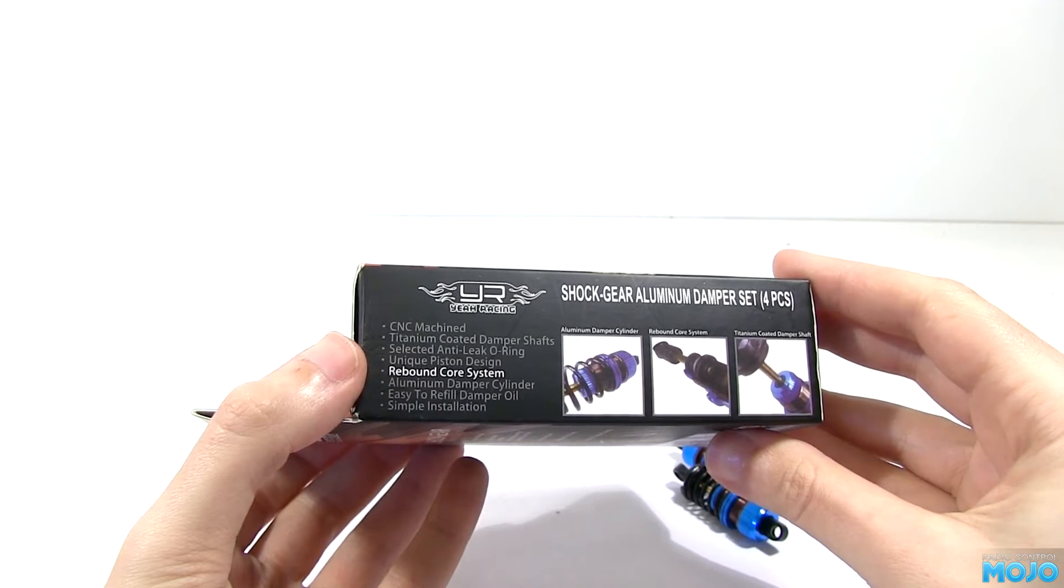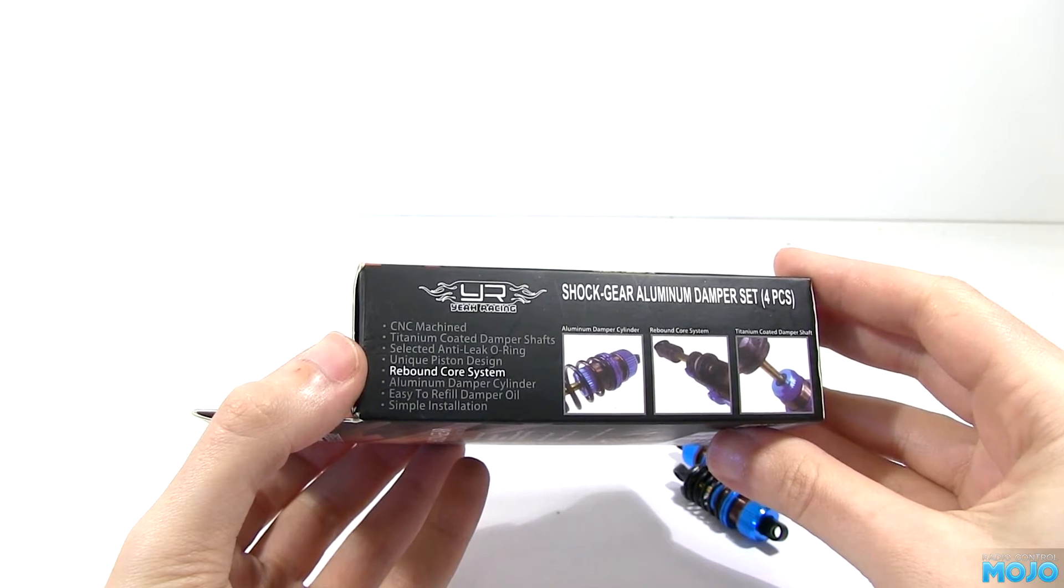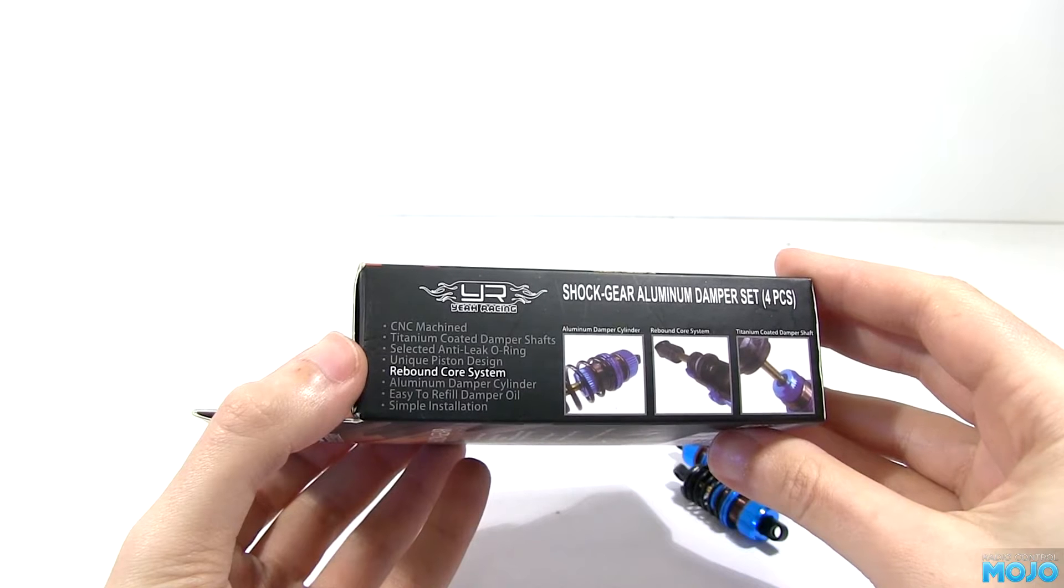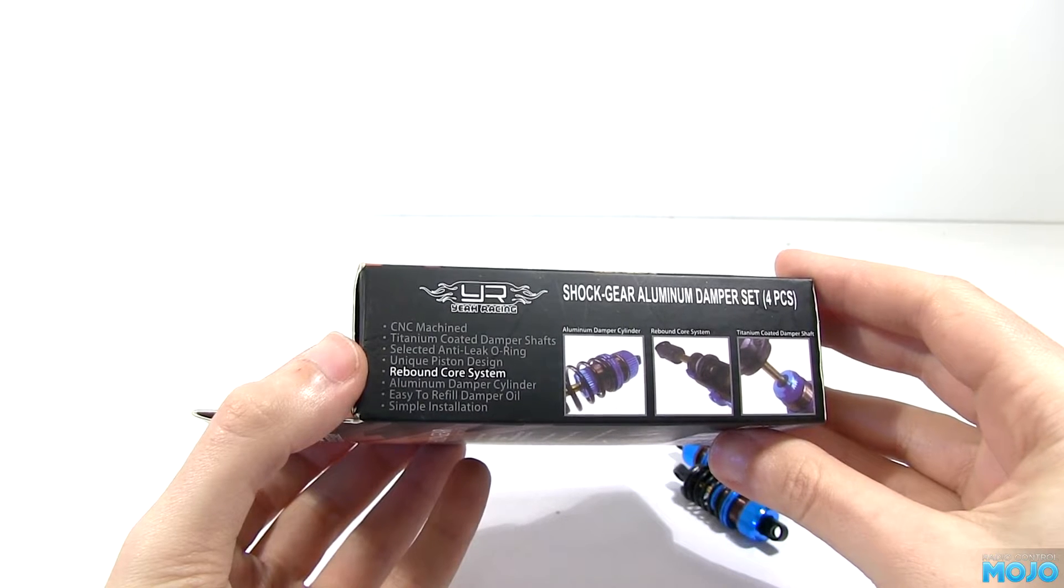CNC machine. Titanium coated damper shafts. Selected anti-leak o-ring. Unique piston design. Rebound core system.